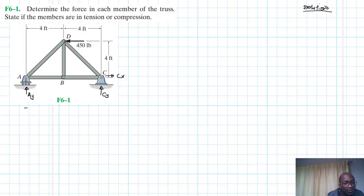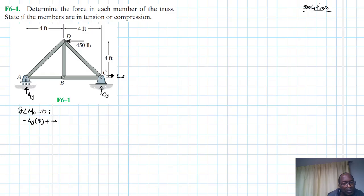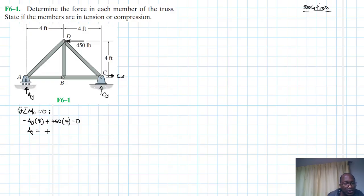Let's apply the equations of equilibrium to find the reaction forces. We start with summation of moments about point C equal to zero, anticlockwise being our positive reference. We have minus Ay times 8, plus 450 times 4, equal to zero. Therefore Ay equals 450 times 4 divided by 8, which gives us 225 pounds.